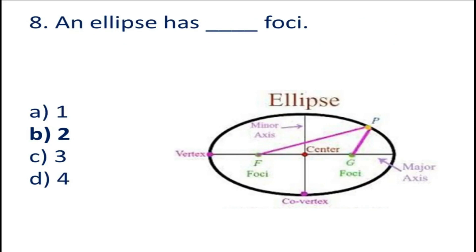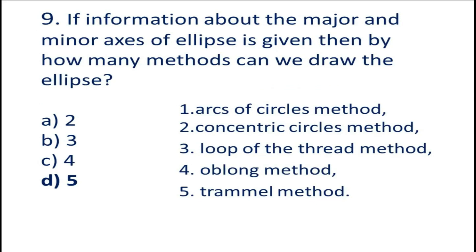Question number 8: An ellipse has blank foci. Question number 9: If information about the major and minor axis of an ellipse is given, then by how many methods can we draw the ellipse?